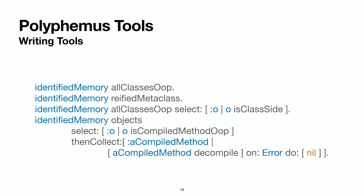This allows us to write tools. Let's look at a basic one first. I can ask an identified memory for all its classes — without needing to know there is a VM-level entity called the class table. I can ask for a particular identified class, such as a metaclass. I can get the class size of each class. Or, more interestingly, we can use Pharo-level tools: one experiment we ran was to take all objects in the identified memory, filter to only the compiled method OOPs, and for each of them try to decompile them with the Pharo language decompiler. When there is an error, we simply return nil. So far we are able to decompile most of the Pharo image methods.